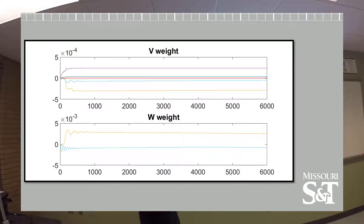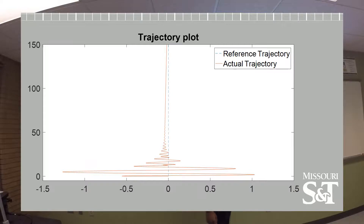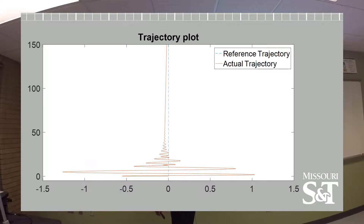The neural network weights are all bounded. And here's the most interesting plot, I think. You have the reference robot at 90 degrees, zero, zero. The actual robot is at a little under 180 degrees, location zero, zero, and the actual robot oscillates as it starts to converge to the reference robot's path.